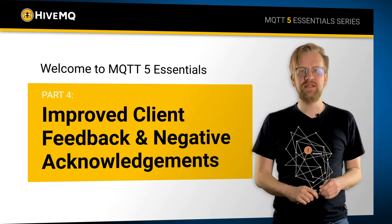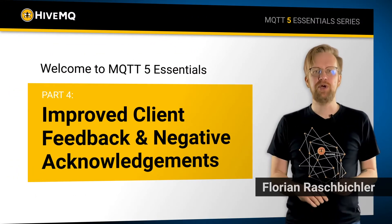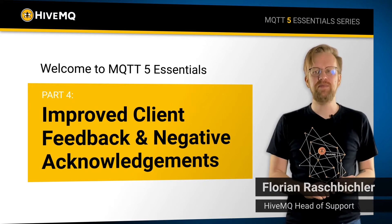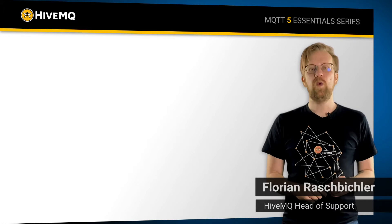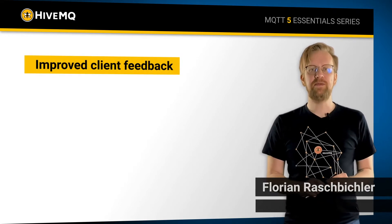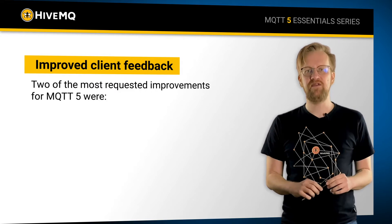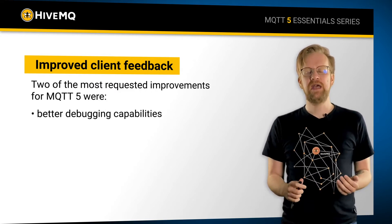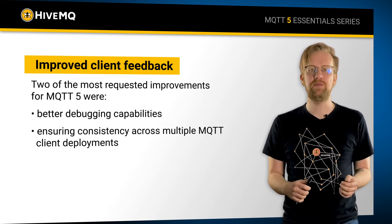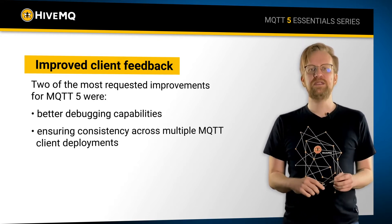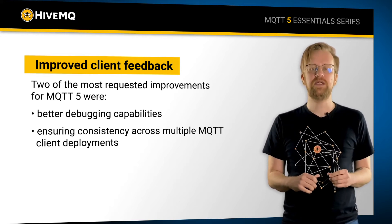Welcome everybody to MQTT Monday. In today's edition we're going to be talking about the improved client feedback and negative acknowledgements in MQTT 5. When asked about possible improvements for the MQTT 5 specification, many users said that they would like to have better debugging capabilities as well as a way to ensure consistency across multiple MQTT deployments. This is why the feature set for improved client feedback and negative acknowledgements got introduced.